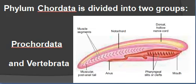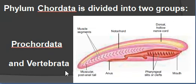Phylum Chordata is divided into two groups: Protochordata and Vertebrata. We will see the details in the next part.